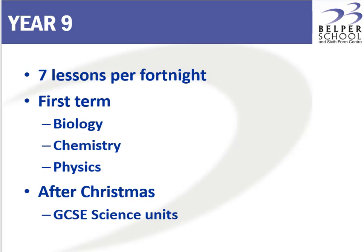Year 9 is divided into two parts. In the first part, which is the term up to Christmas, we finish off the Key Stage 3 biology, chemistry and physics work to wrap up the topics that we've been doing in Year 7 and 8 and to finish off developing the skills the students are going to need as they move on to GCSE. Then after Christmas they make a start on their GCSE science units.